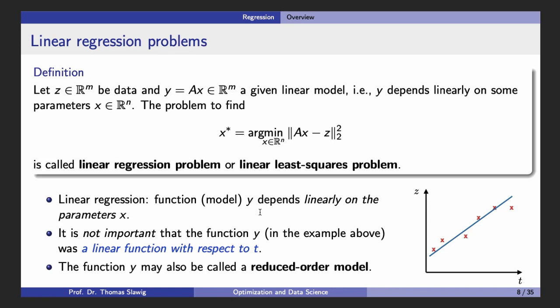The main point corresponding to the term linear regression is that the function y depends linearly on the parameters. It is not important that the function itself is a linear function. This is a regression line which gives a linear regression problem. We also use the term reduced order model because we have a model with just two unknowns, which is a simplification or approximation of the original data.